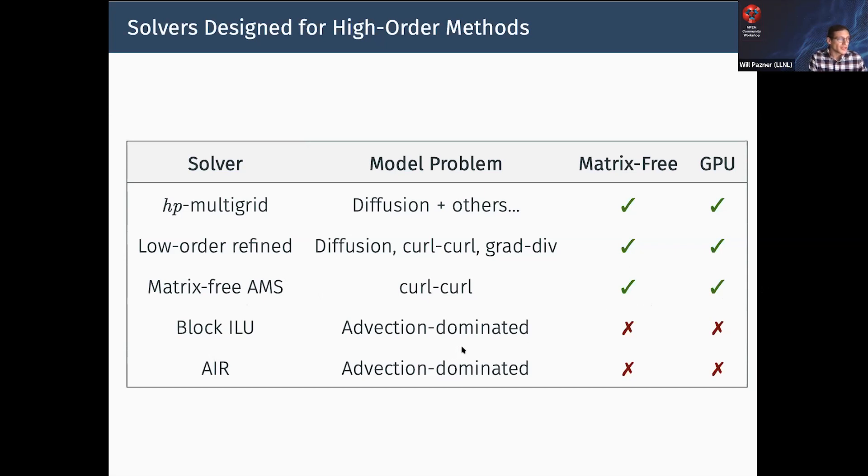For advection-dominated problems, it's a little bit harder. The situation is not as good as for elliptic-type problems. But we do have some options that are good for high order, though they're not matrix-free or on the GPU yet. We've got a block ILU which is really good for DG-type discretizations, and approximate ideal restriction, which is a type of AMG also good for advection-dominated or non-symmetric systems.